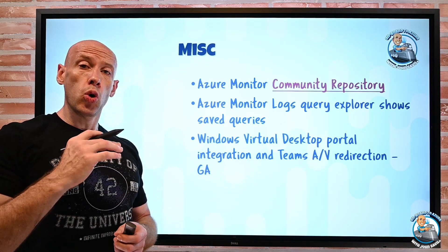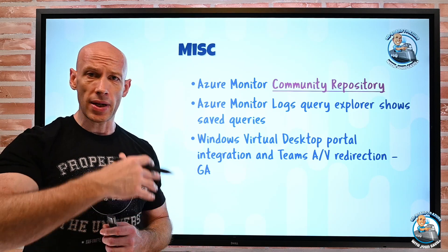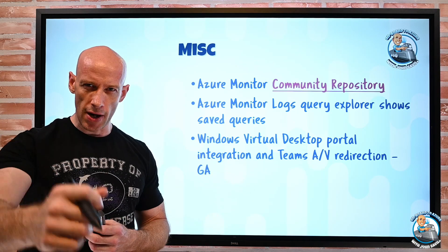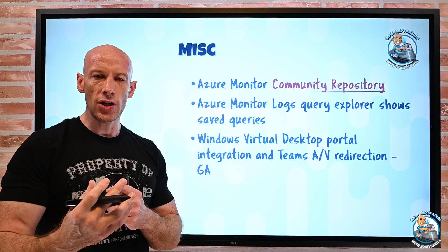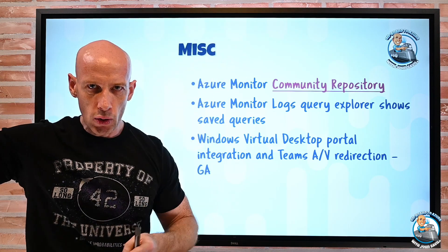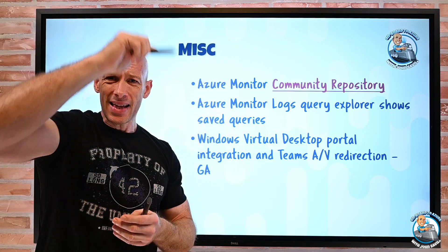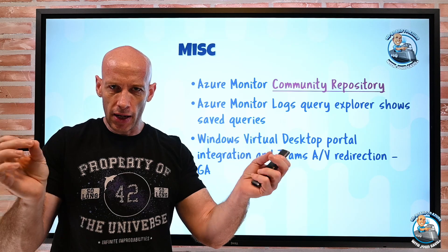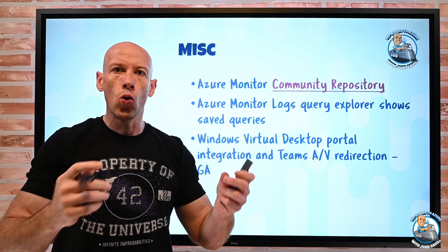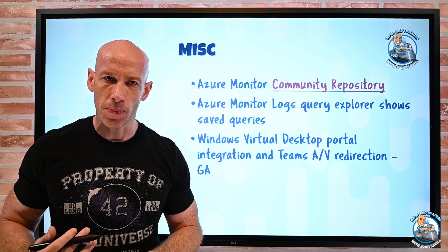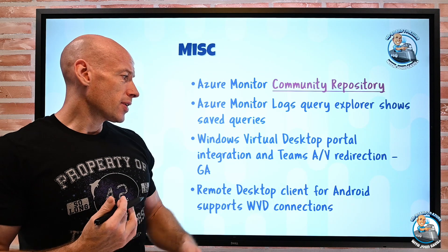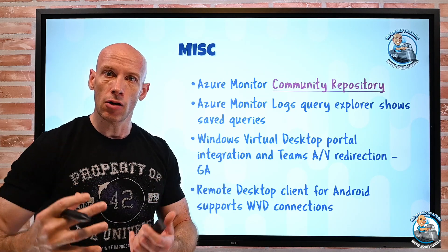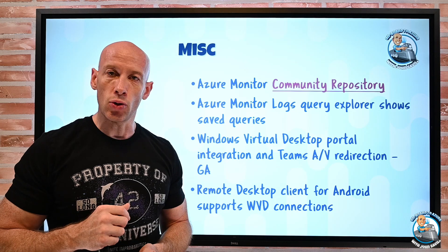Windows Virtual Desktop updates: the portal integration with ARM and role-based access control is now GA. Also, Teams AV redirection is now available — instead of audio-visual traffic going up to your virtual desktop in Azure and then back down to the other client, this redirection opens a direct path between the two clients for audio and visual, giving a much better experience. Additionally, the Remote Desktop Client for Android now supports Windows Virtual Desktop connections, so you can access your WVD from the generic Android RD client.